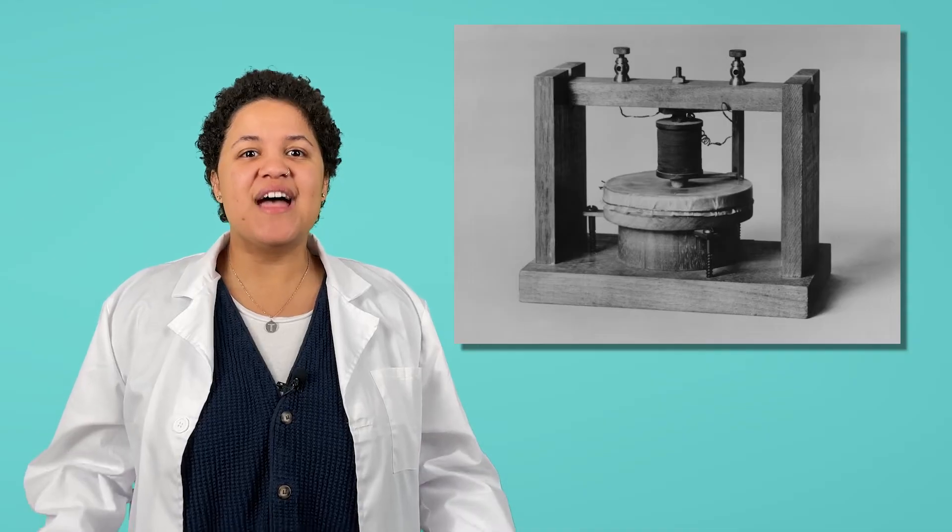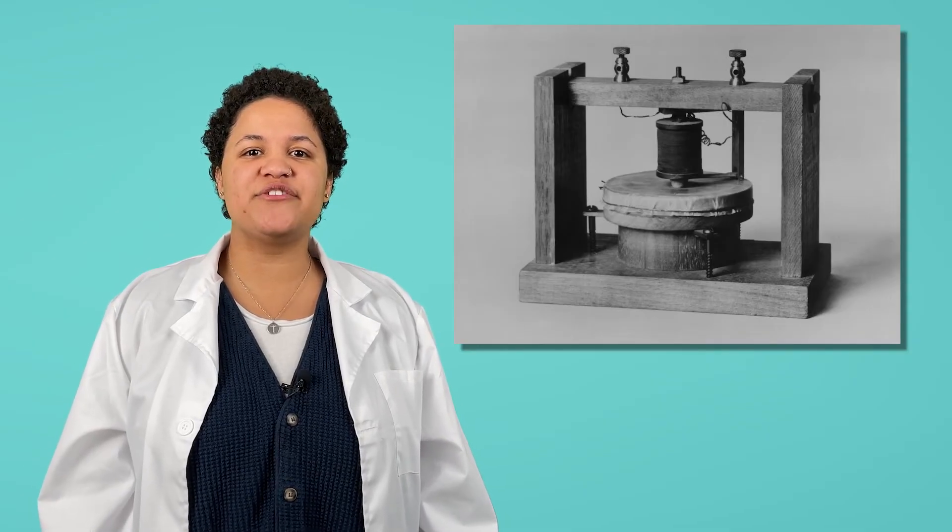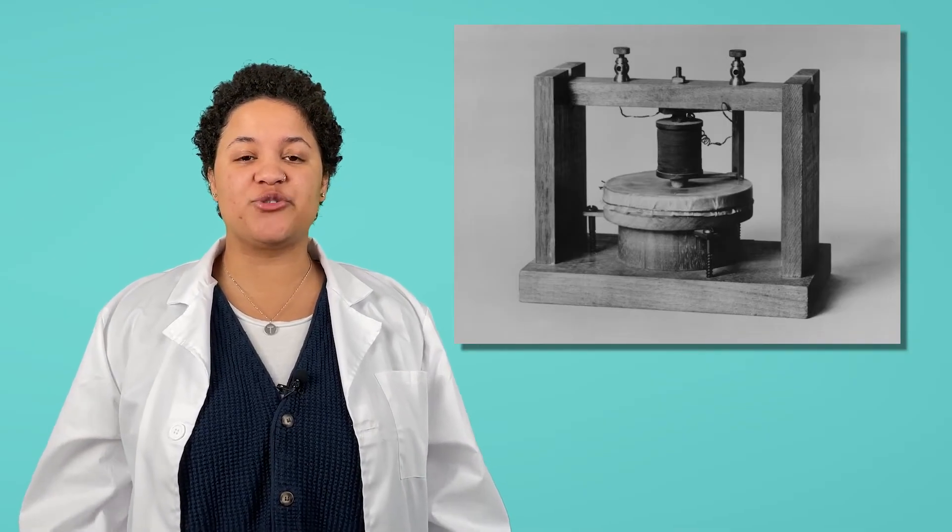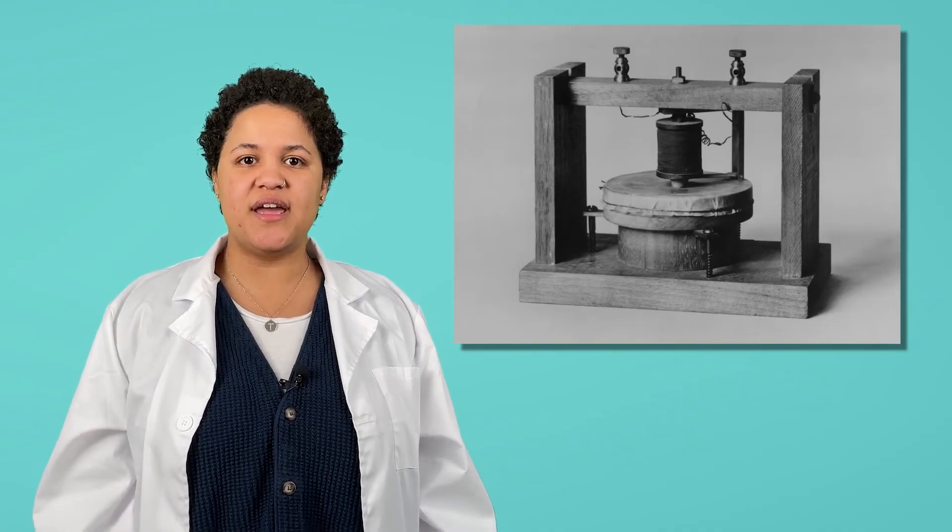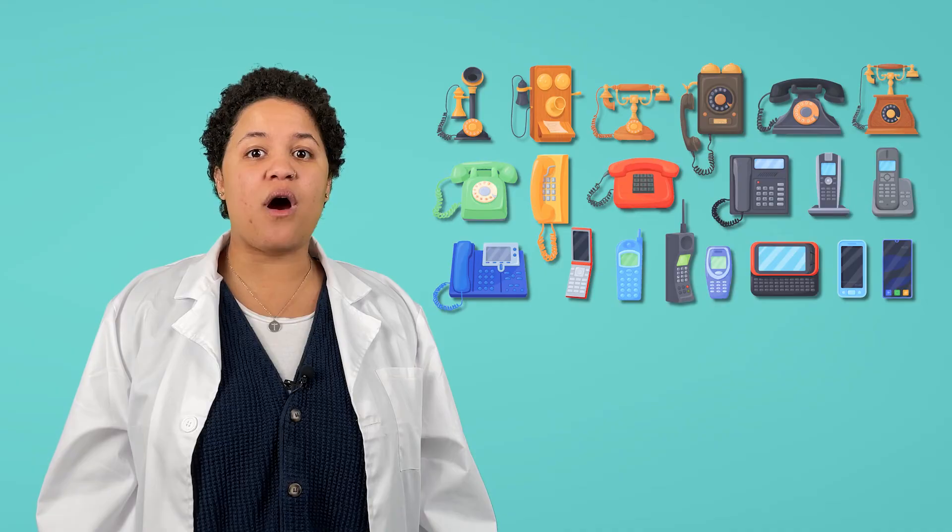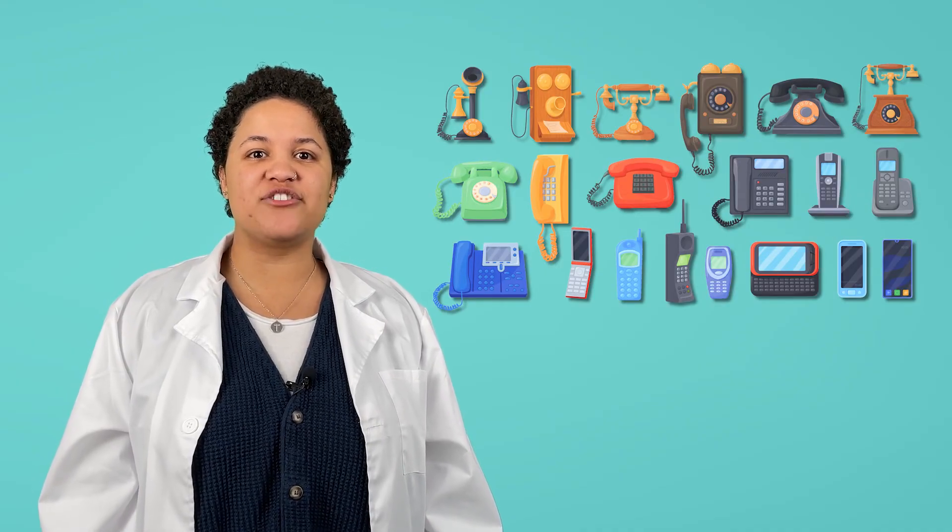One scientist named Alexander Graham Bell found a way to use electricity and vibrations to send voices across wires. In other words, he invented the first telephone. Scientists often use what they understand about the natural world, like electricity, to create new things, like the telephone, that people can use. Even though the phones we use now are very different, this scientific invention helped us create the technology we use today.